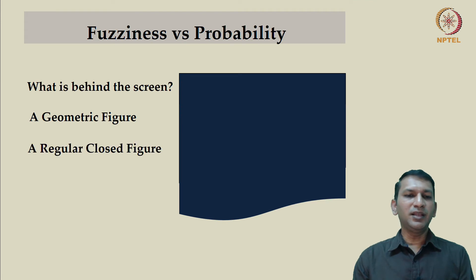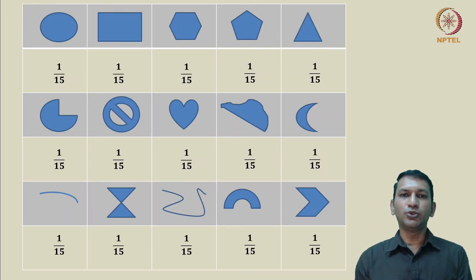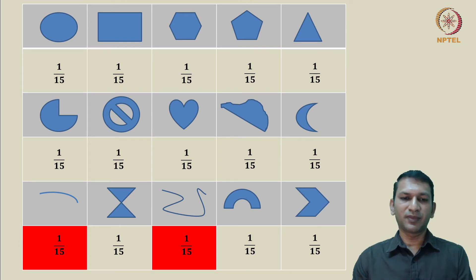Now, we get a little more information that it is a regular closed figure. This information allows us to revise or reduce our sample space. We are given that it is a regular closed curve. Immediately, we see that this is not a closed curve, and so is the case with this. Since we are given the term regular, let us understand this in terms of common usage, which means you could immediately exclude this figure.